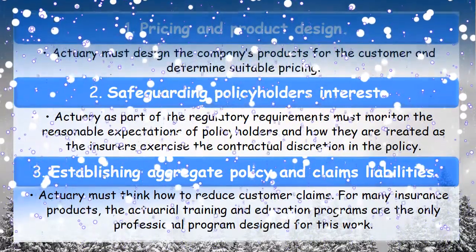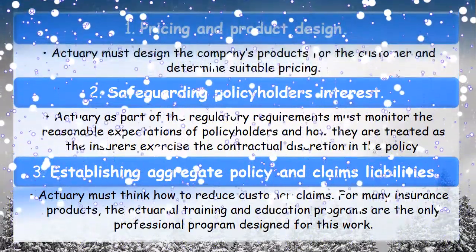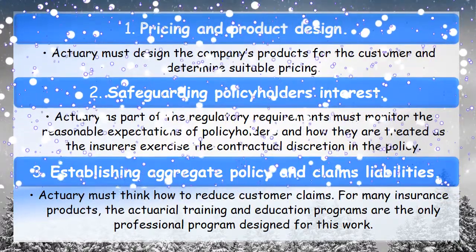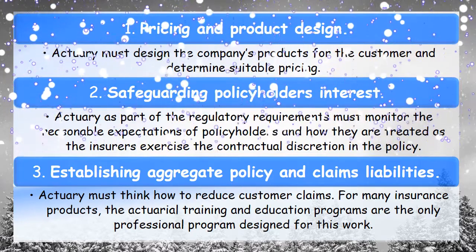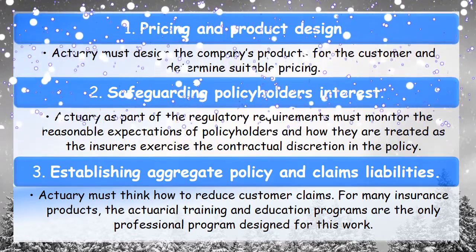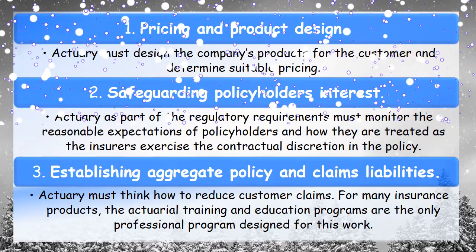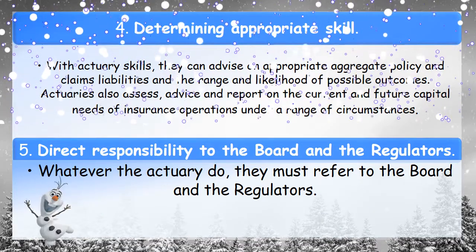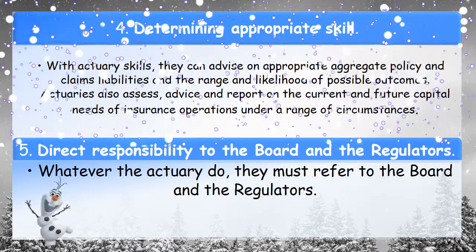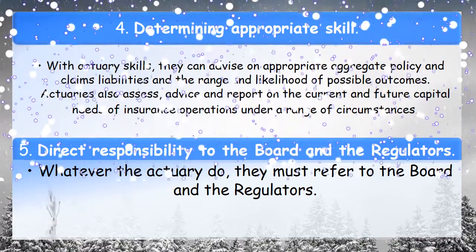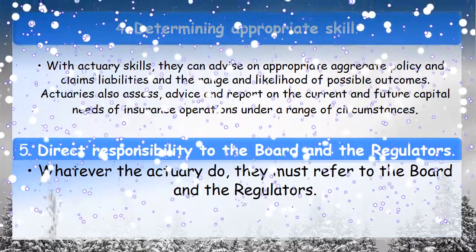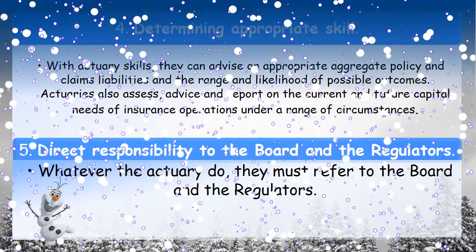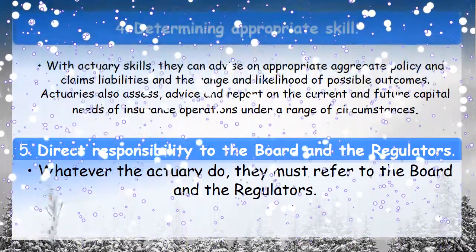Third, they need to establish the aggregate policy and claims liabilities. The actuary must think about how to reduce customer claims. For many insurance products, the actuarial training and education programs are the only professional programs designed for this work. Fourth, they need to determine the appropriate skills. With actuary skills, they can advise on appropriate aggregate policy and claims liabilities and also the range and likelihood of possible outcomes. Actuaries also assess, advise, and report on the current and future capital needs of insurance operations under a range of circumstances.